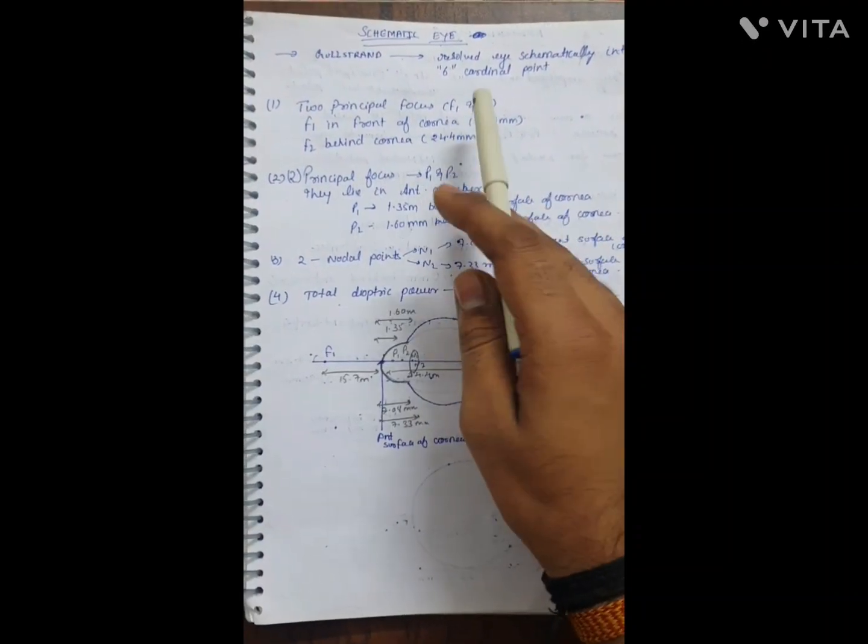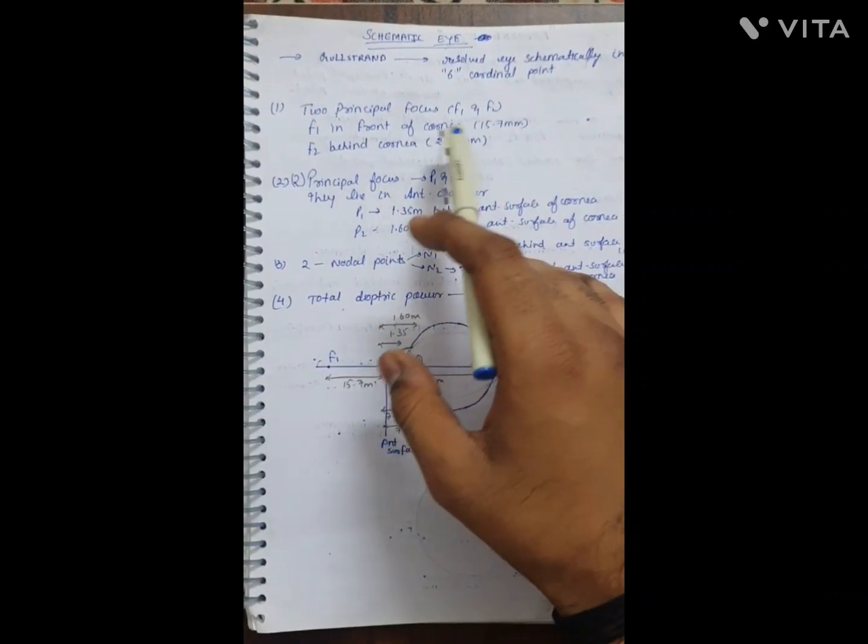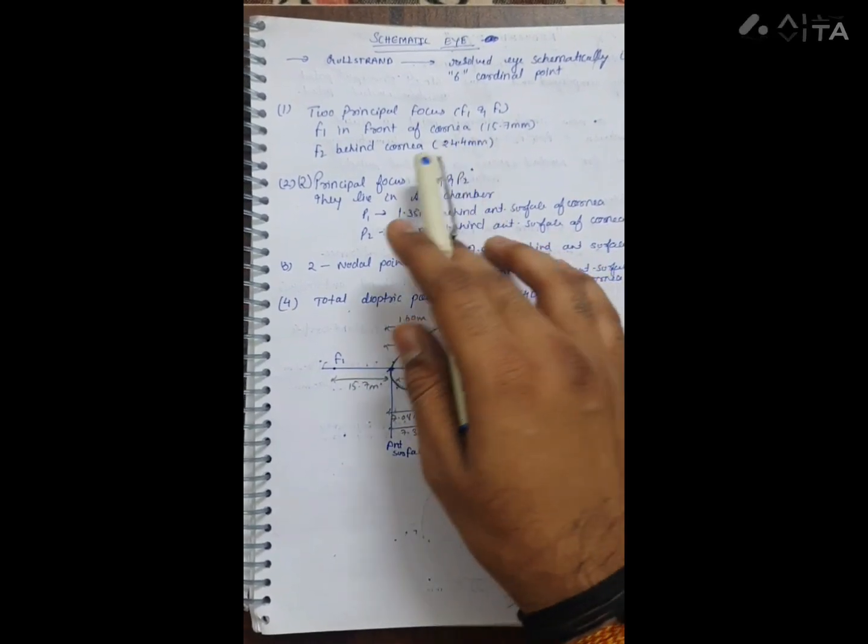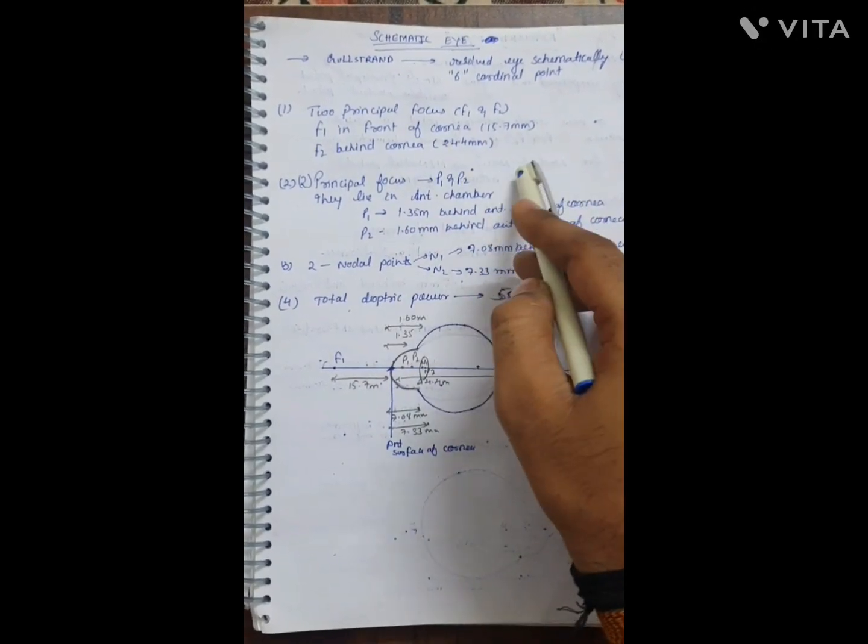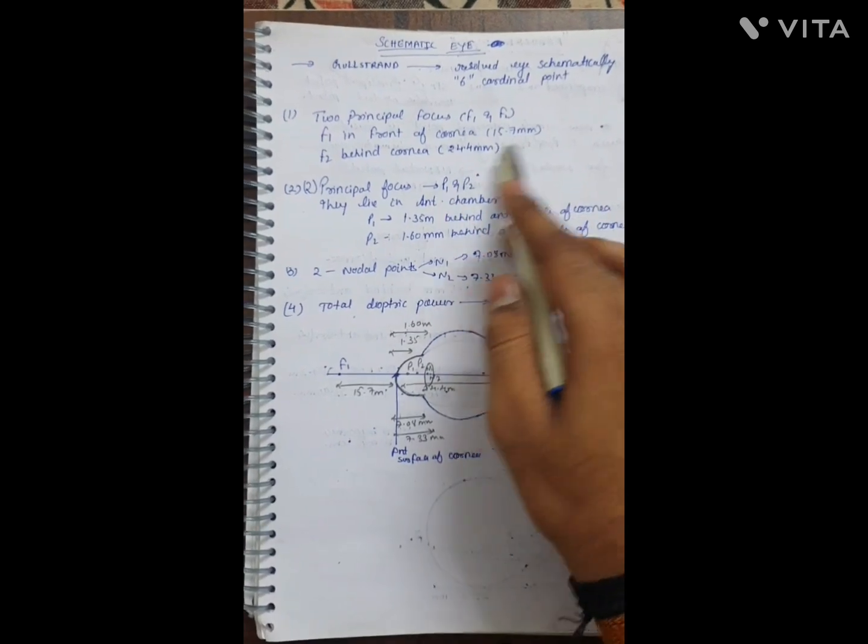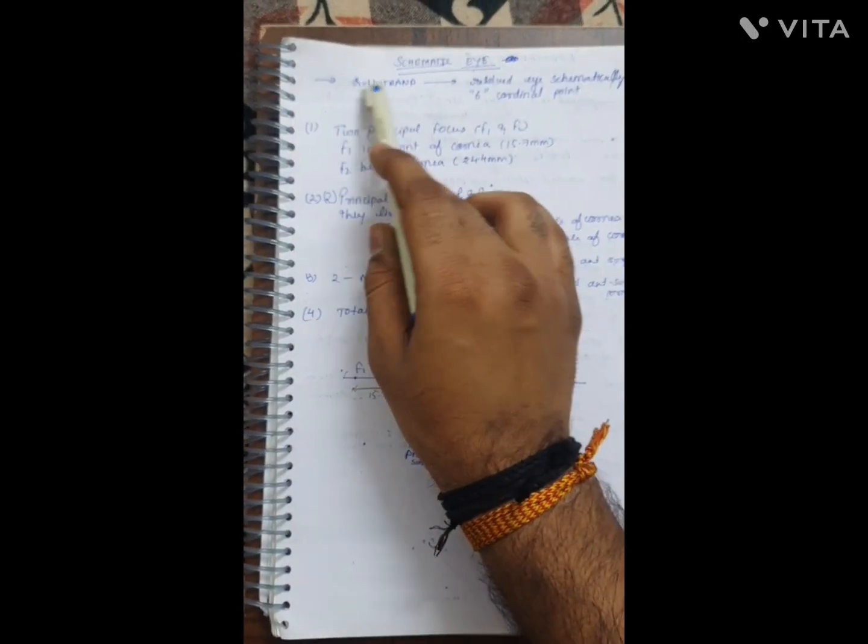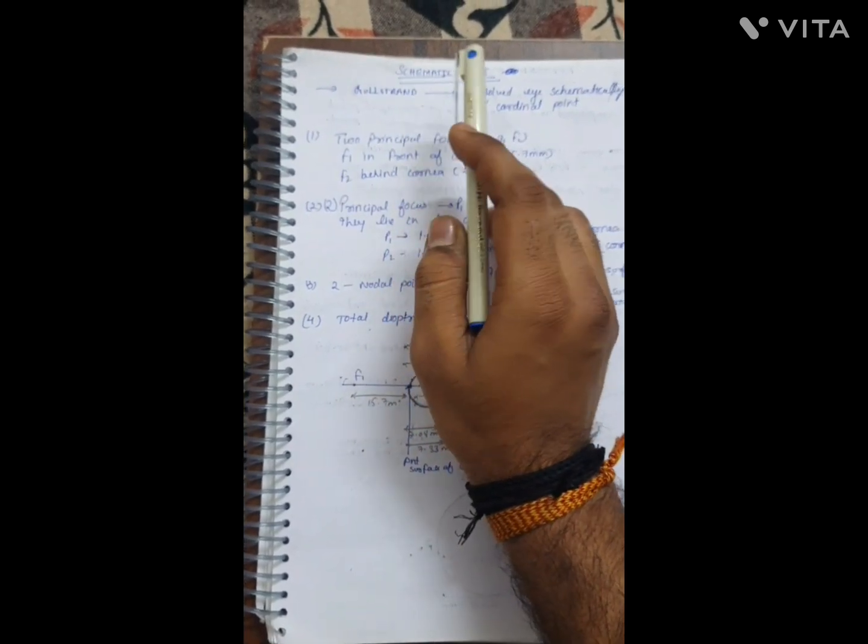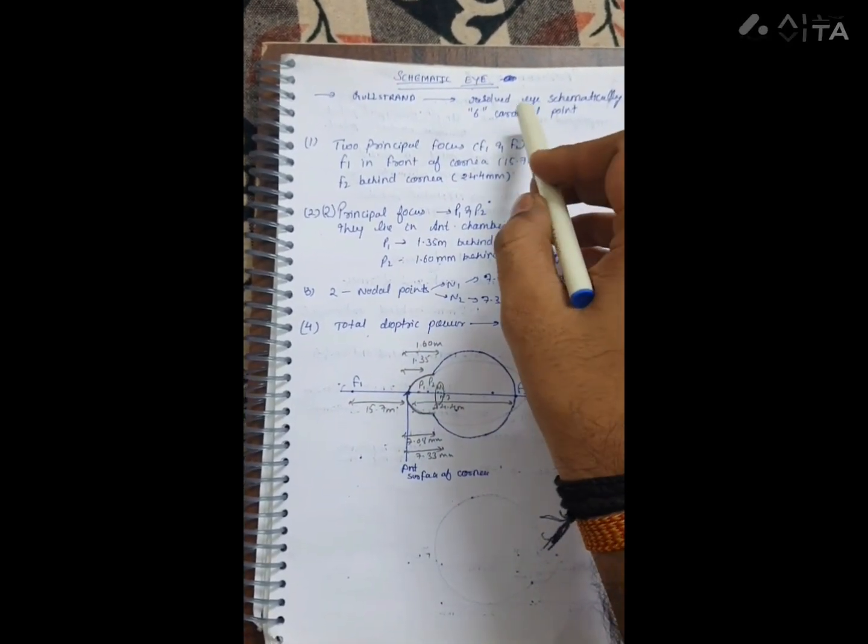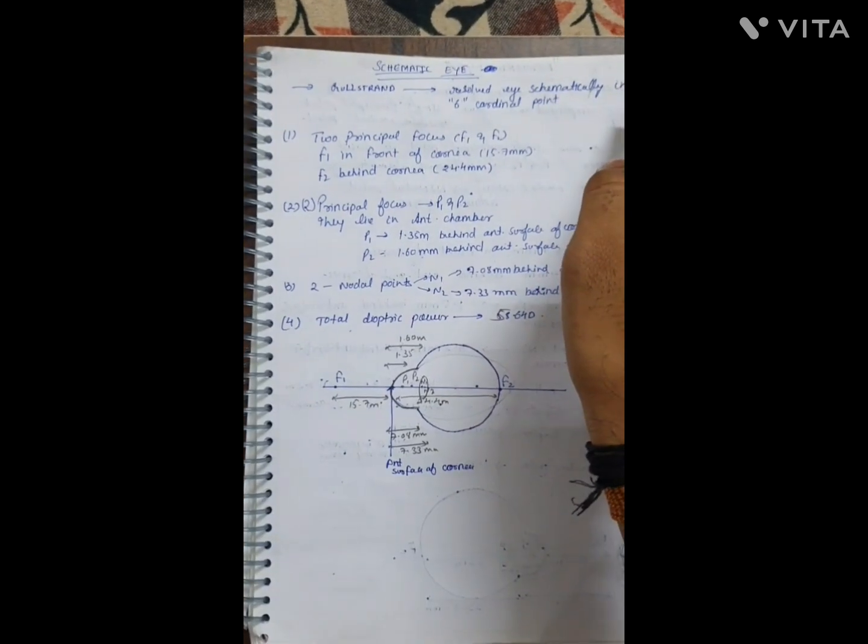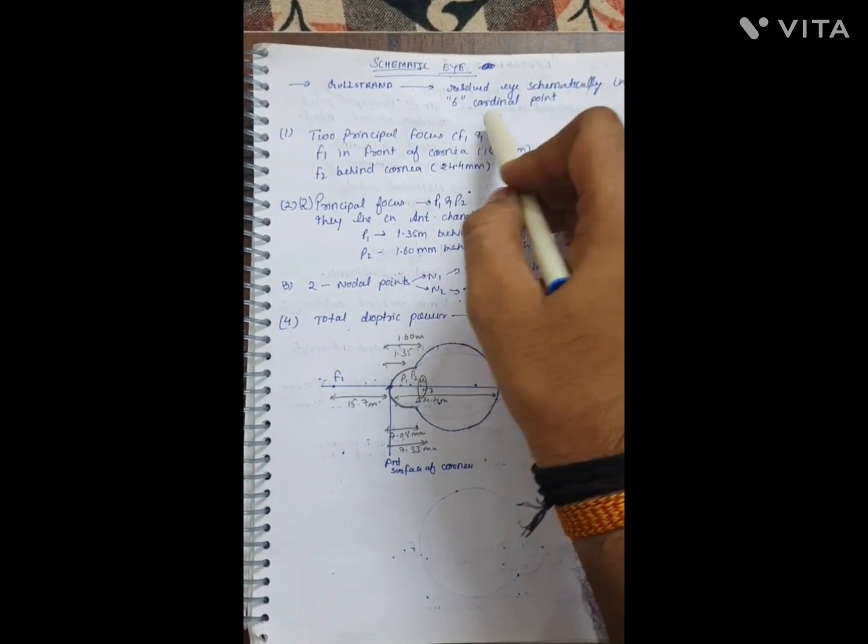Today's topic is schematic eye - how we can display an eye diagrammatically or schematically for its measurement. This was given by Gullstrand, who resolved the eye schematically into six cardinal points.